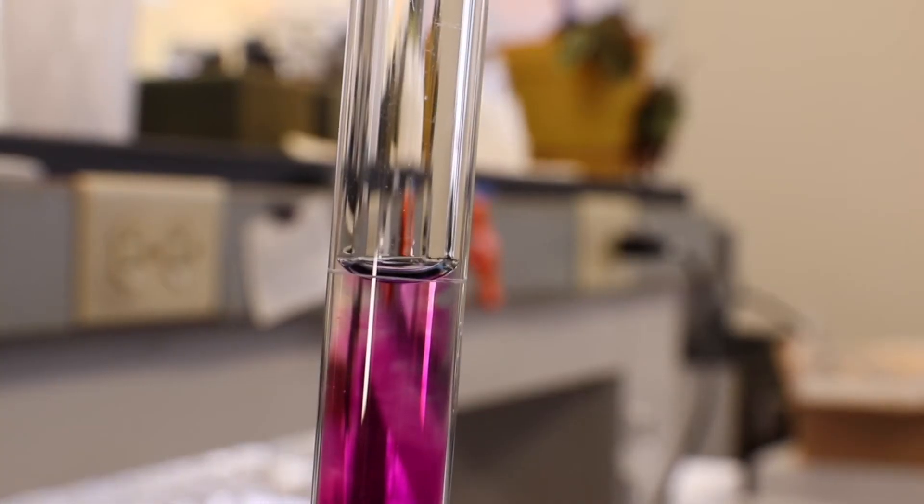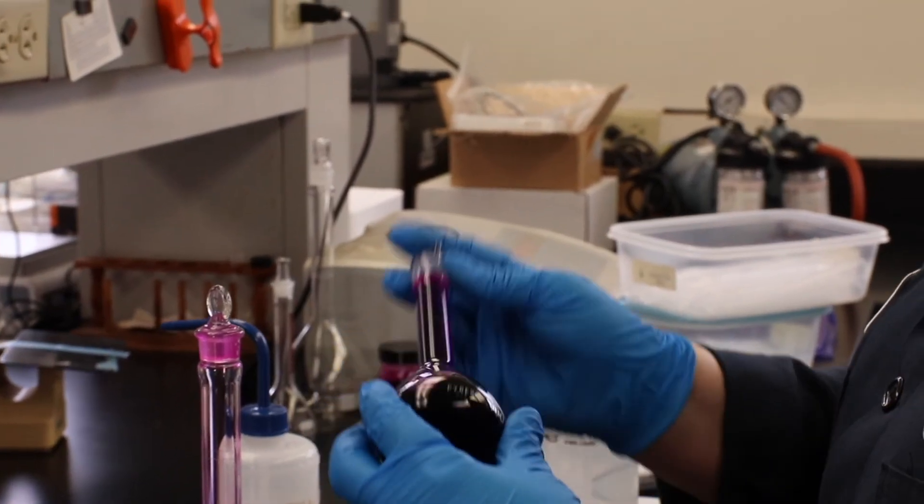Make sure that the bottom of the meniscus is at the line so that you have the correct amount of 100 milliliters in the volumetric flask. Mix well.